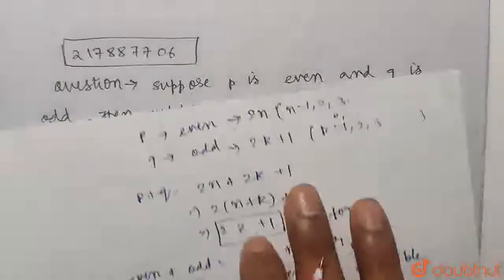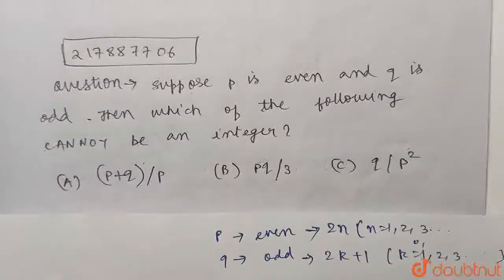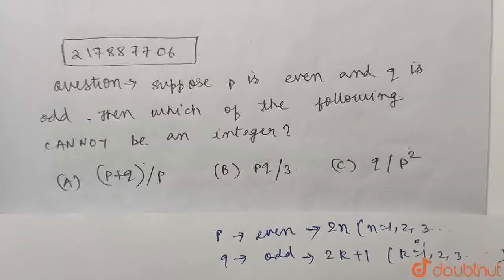So which are the options that cannot be an integer? That is A and C. Because B can be an integer when Q is a multiple of 3. So A and C will be our answer. P plus Q upon P and Q upon P squared can never be an integer if P is even and Q is odd. I hope you guys understood. Thank you very much.